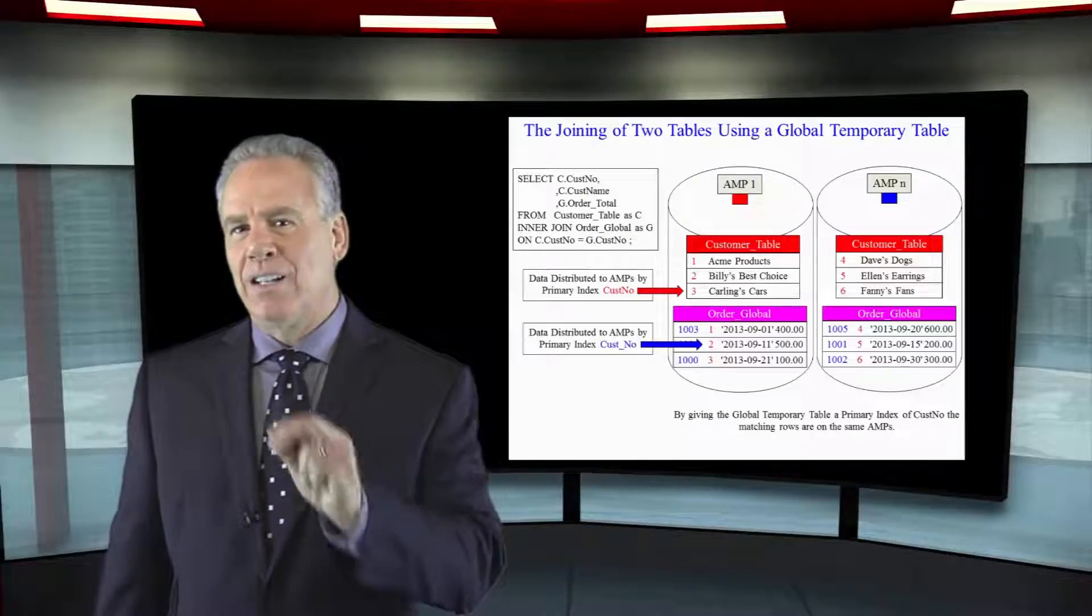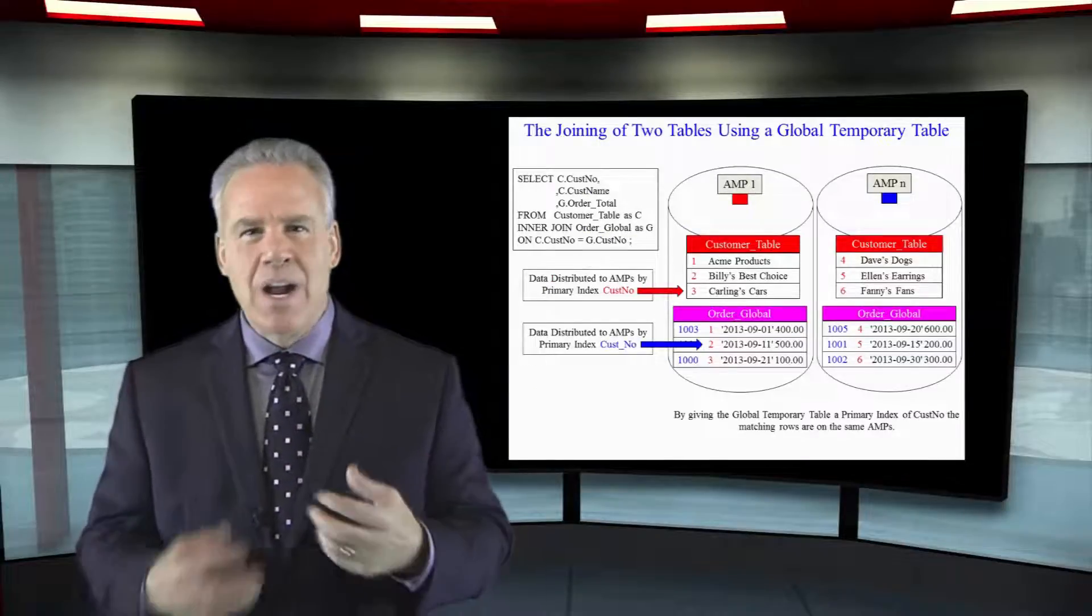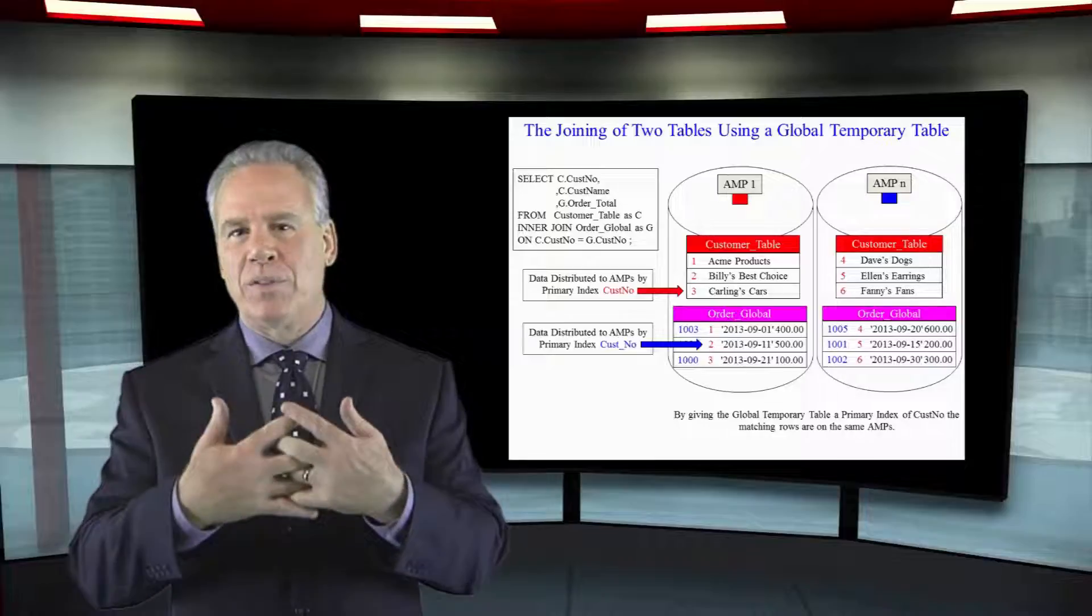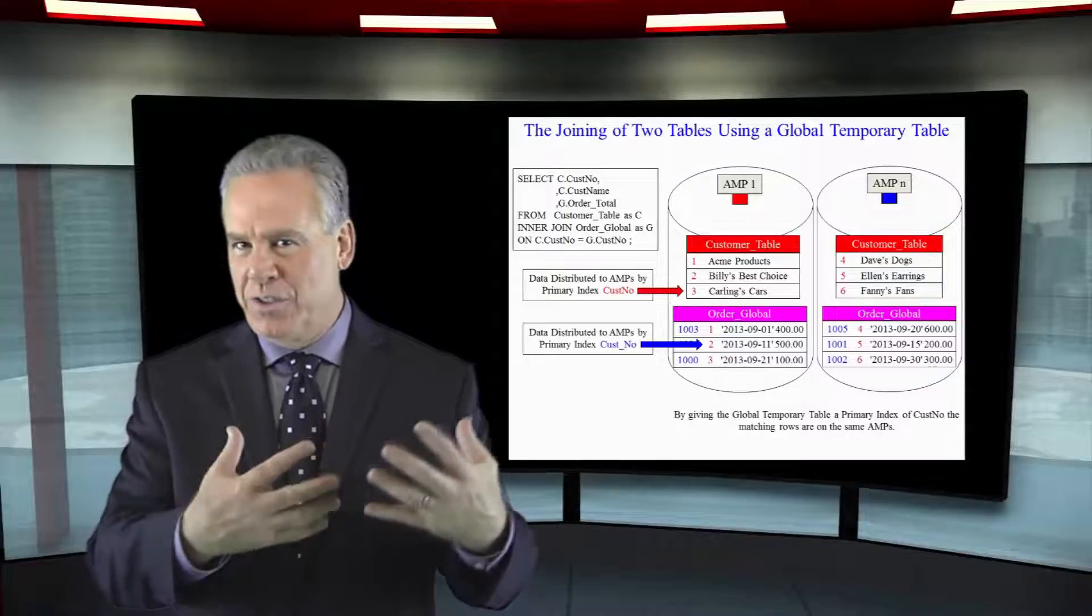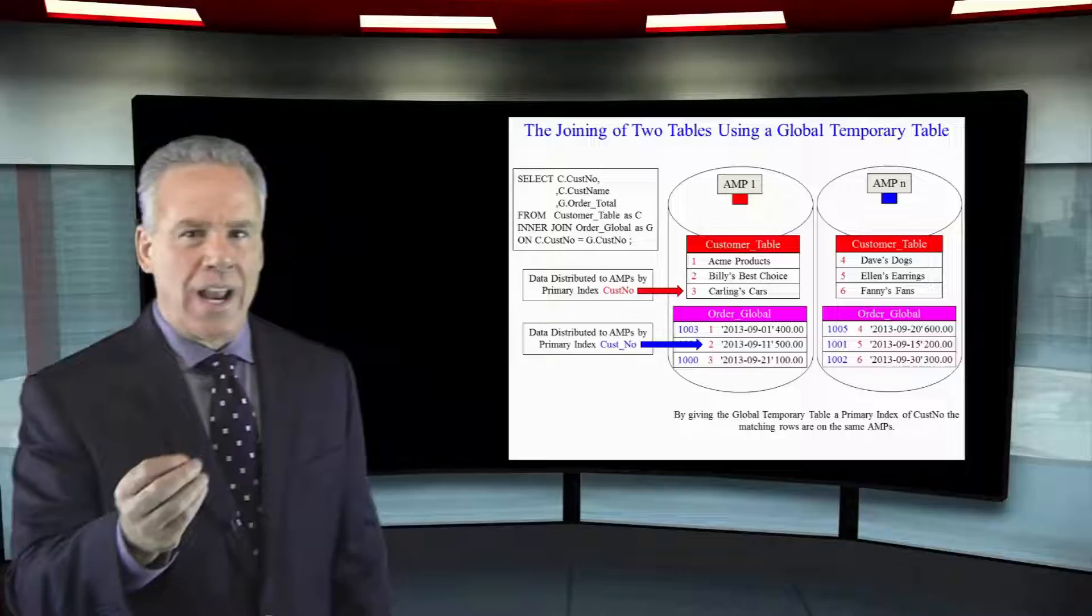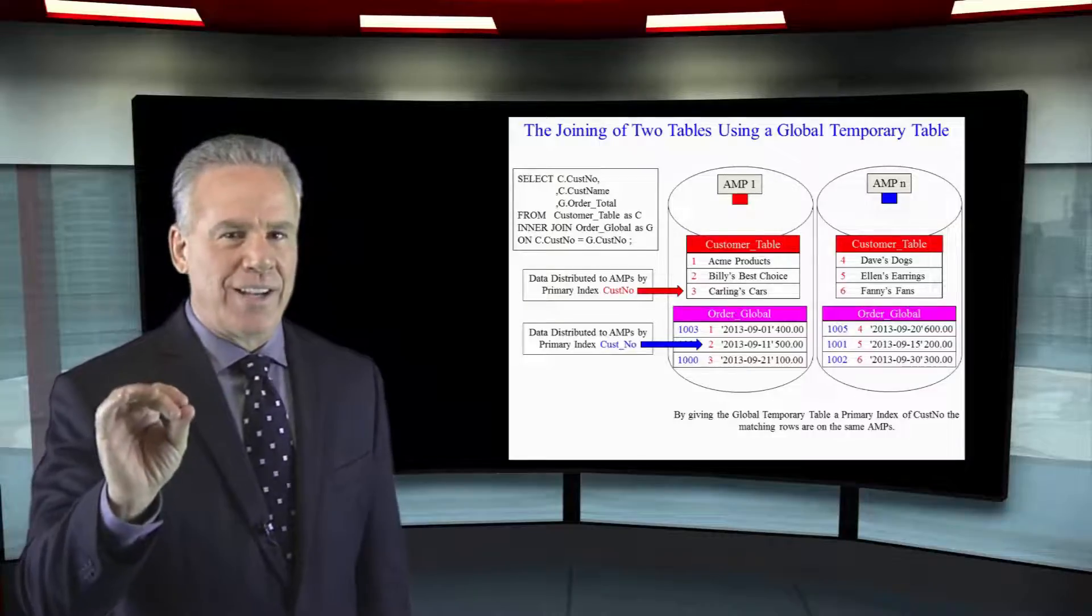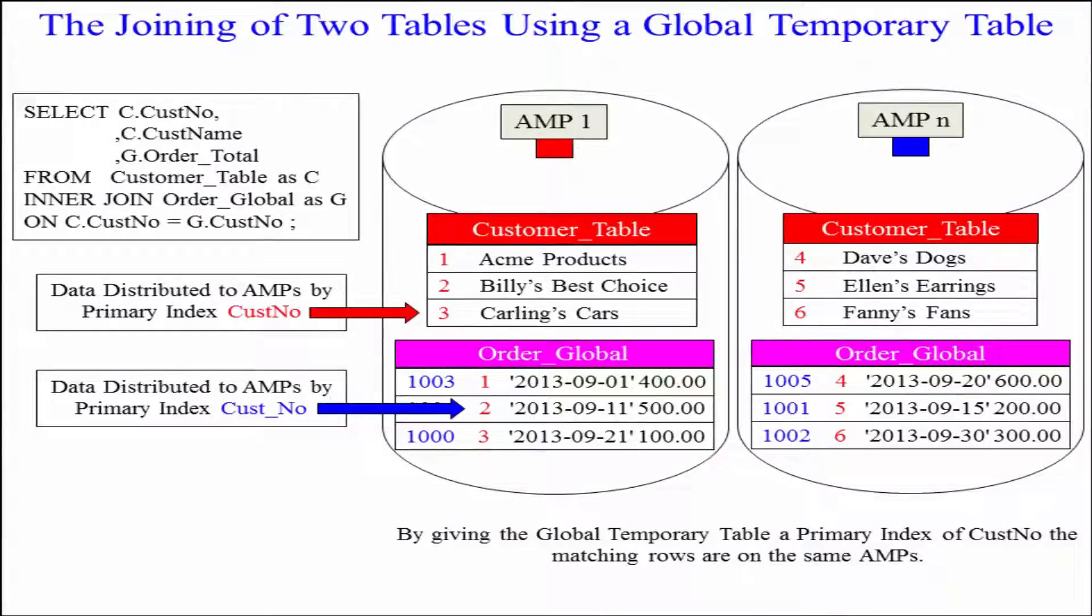When I created my global temporary table I knew that one of the purposes would be to join it to the customer table. That's why I picked a primary index of cusno because when I join my volatile table to my real customer table...